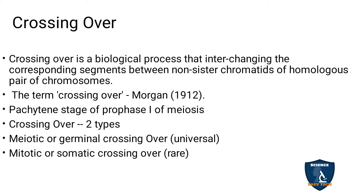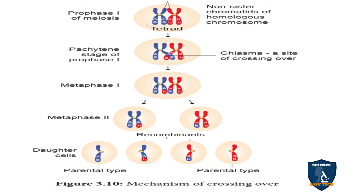Now you must know the definition of crossing over. Crossing over is a biological process that interchanges the corresponding segments between two non-sister chromatids of homologous chromosomes. In this image, you have two different colors — four chromosomes are one color and four are another. The red and the blue are different — they are non-sister chromatids, and they are going to cross over. You are seeing the picture of the crossing over mechanism here.